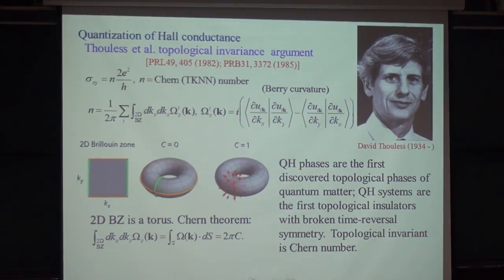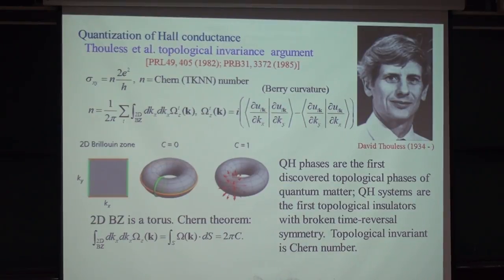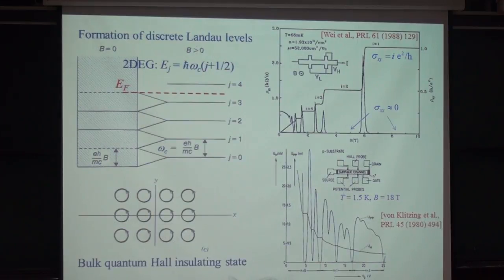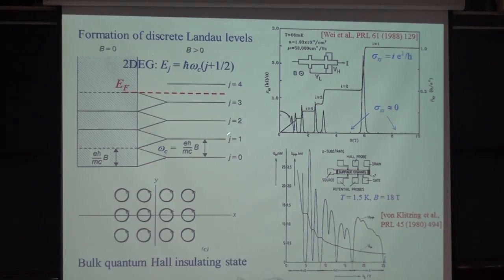This integer is connected to the topology of the Landau level — this topological number is the Chern number. Each Landau level has Chern number equal to one. So if the Fermi level is such that you have 1, 2, 3, 4 Landau levels filled, then the conductance would be 4 times e squared divided by h.